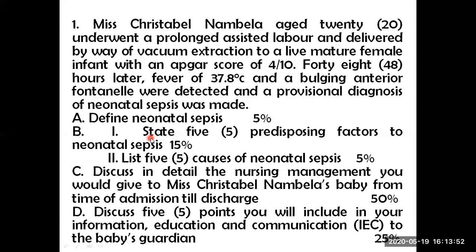Another predisposing factor is early rupture of membranes. When membranes rupture before the baby is ready, there is no protective barrier between the baby and the external environment. Any existing infection, such as a urinary tract infection, may ascend and affect the newborn, whose immune system is not even fully developed.